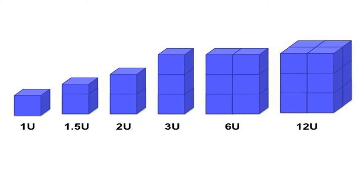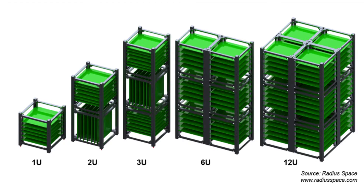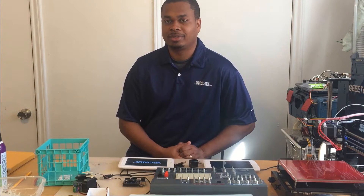CubeSats typically go from 1U — a lot of them are in the 2 to 3U range — then there's 6U, and above that is 12U. They probably go larger than that, but as far as CubeSat standards go, the industry is kind of sticking towards those, though there is not necessarily a law saying you have to do that.